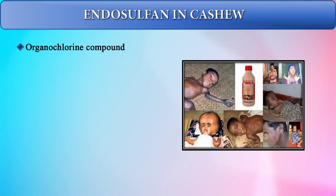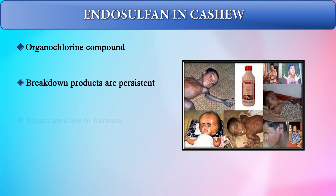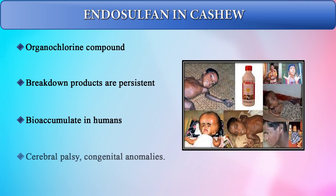Endosulfan was an organochlorine compound sprayed extensively on cashew plantations in Kasaragod district in Kerala, applied using a helicopter. It is persistent in the environment, and even its breakdown products are persistent and bioaccumulate in humans. Children born in that area had cerebral palsy and congenital abnormalities, demonstrating how toxic this chemical is and how it can cause mental aberrations, neurotoxicity, and teratogenic effects including birth defects, especially in the brain.